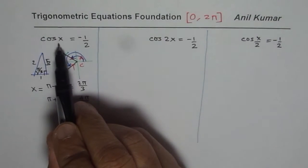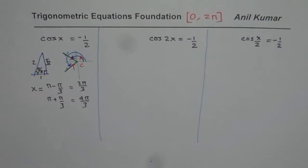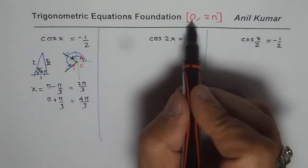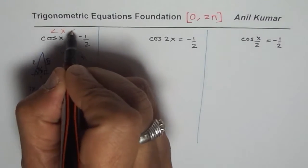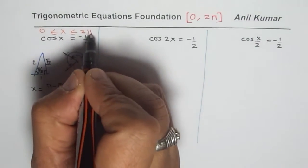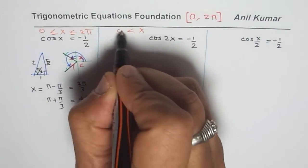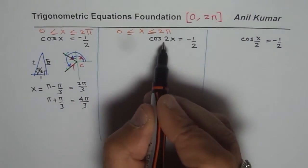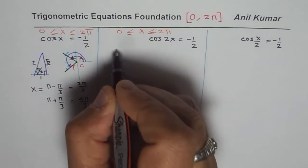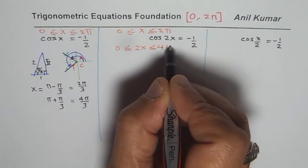Now the same question, if I change the argument, if I make x as 2x, then what changes will it bring? That is the critical part to understand. First change is, this domain is for x. We are saying x is between 0 to 2π. But when we have 2x, we have to multiply this by 2. So we get 2x is between 0 to 4π.